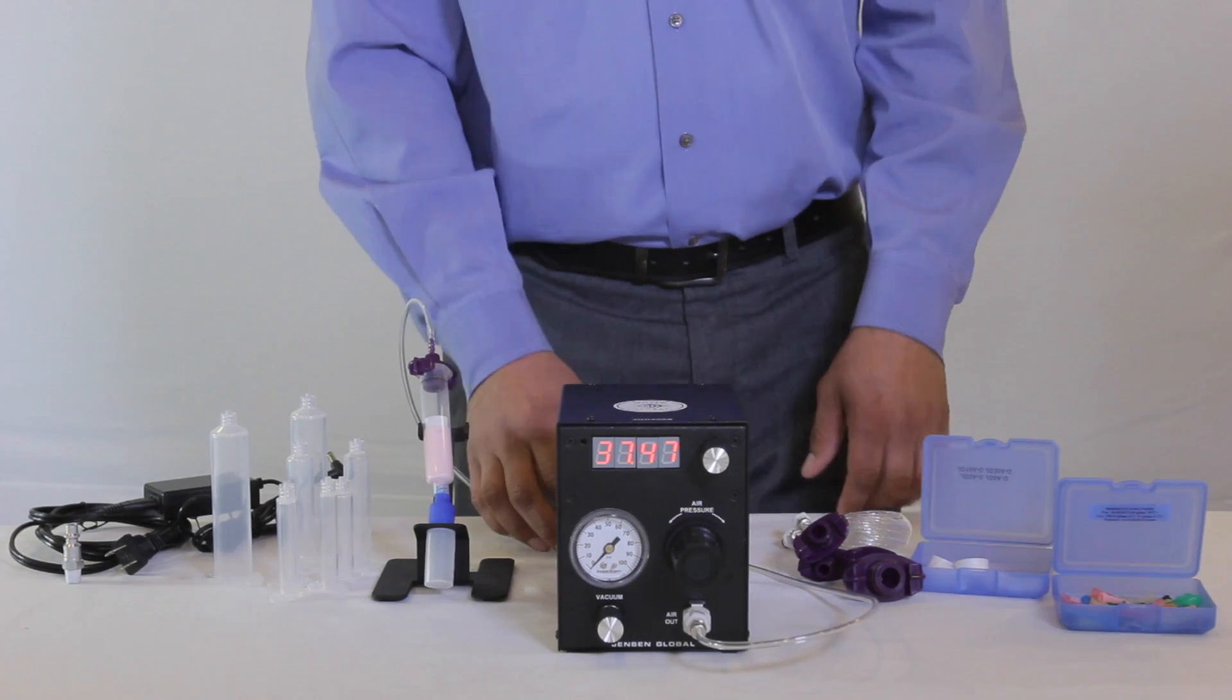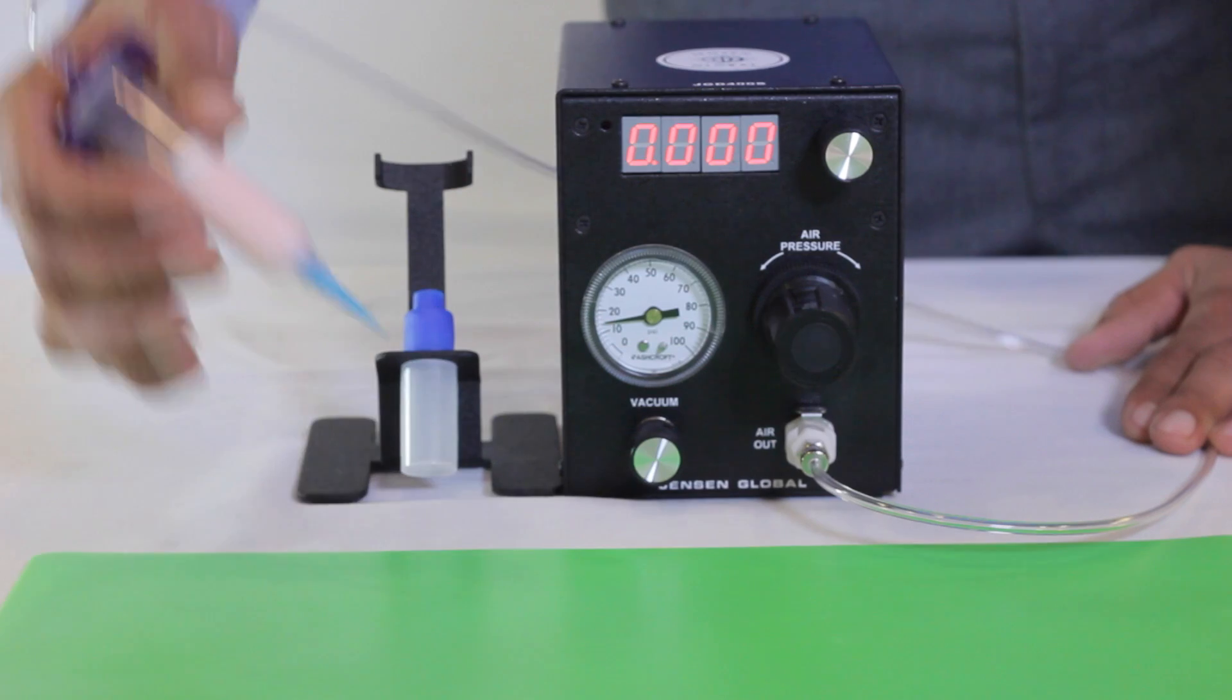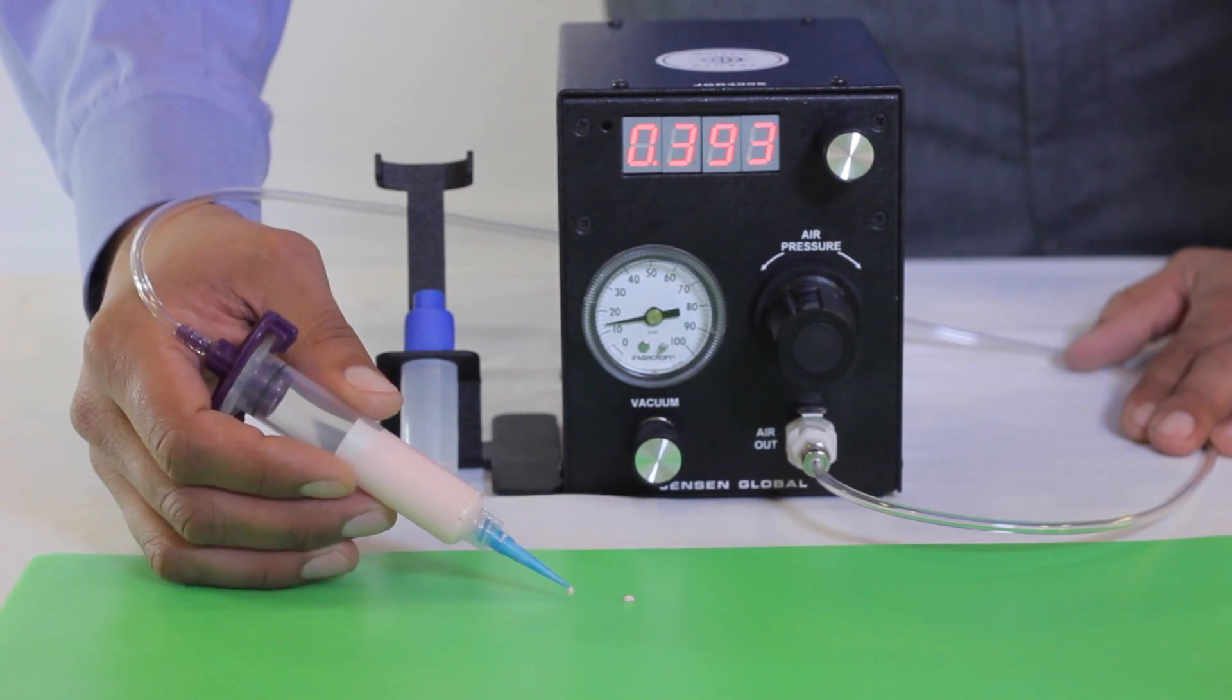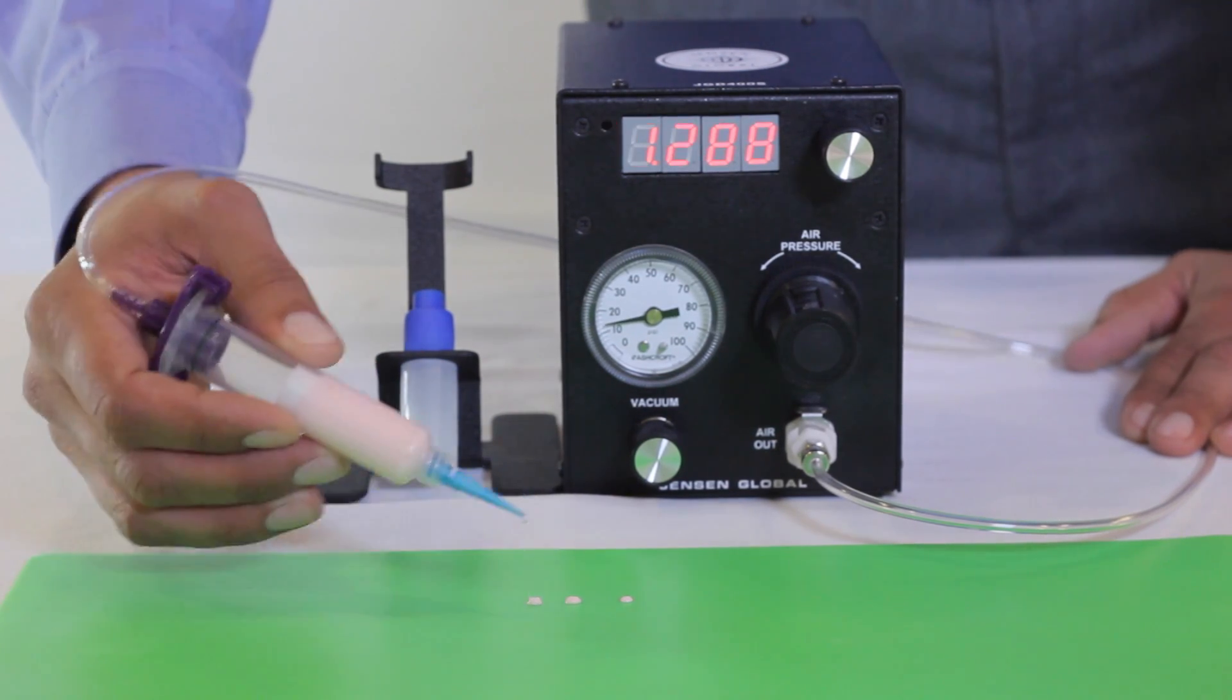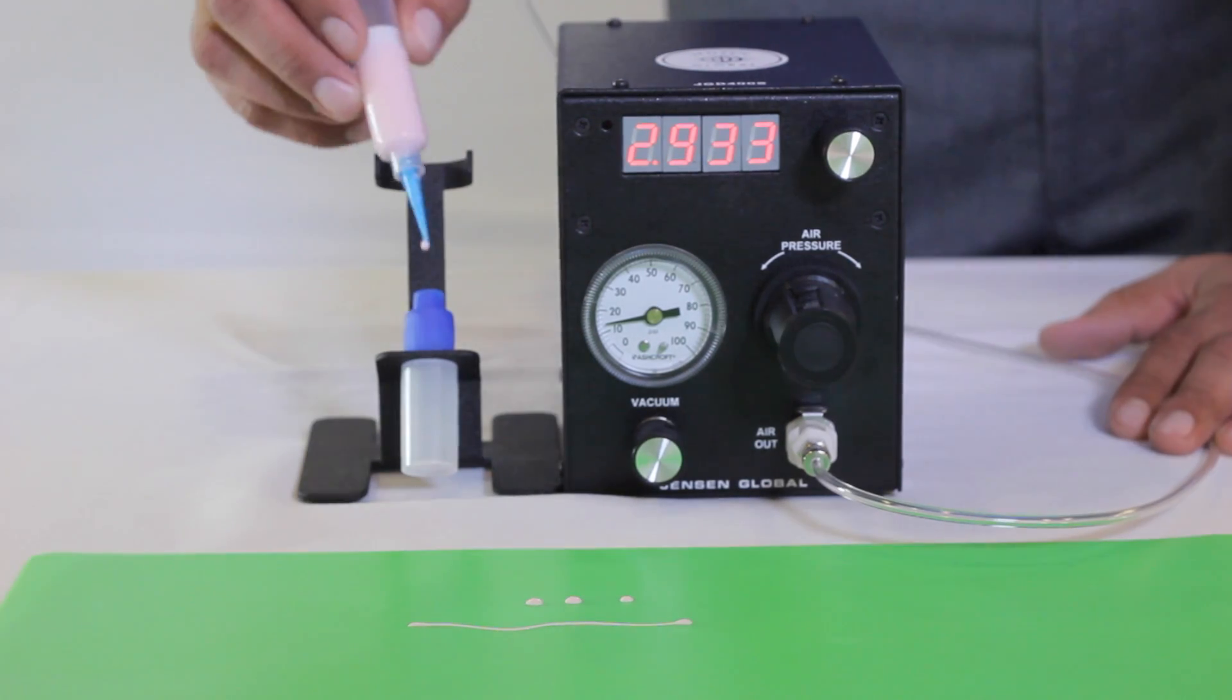The unit has two dispensing modes: manual and auto. In manual mode, you simply press the foot pedal to dispense. The amount of material dispensed is determined by how long the foot pedal is actuated and can be seen on the timer screen.